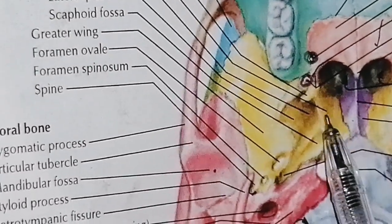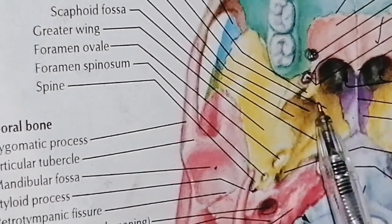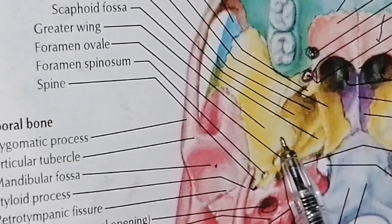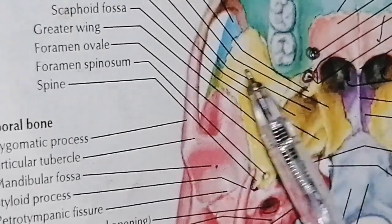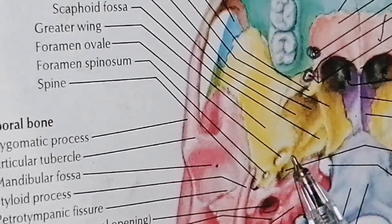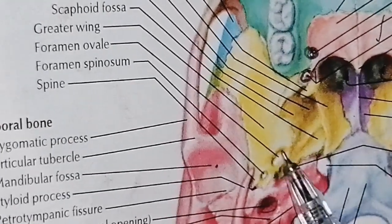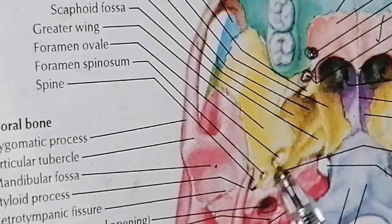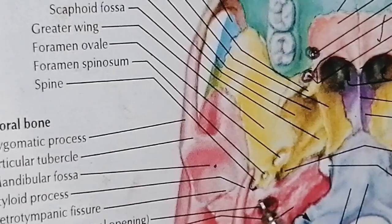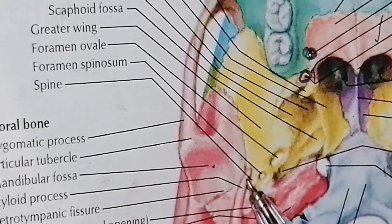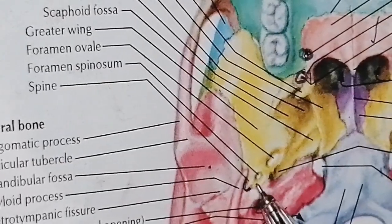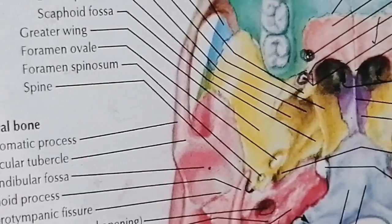So what have we learned here? We have the medial plate and the lateral plate. The lateral plate is posteriorly related to the greater wing, and there are two foramina: the greater one is foramen ovale and the lesser one is foramen spinosum. Then there is the spine of the sphenoid bone.